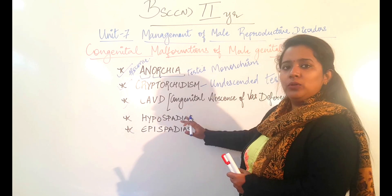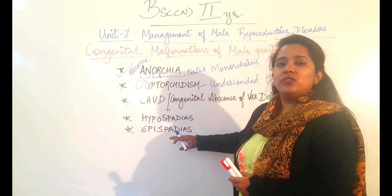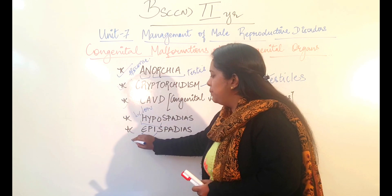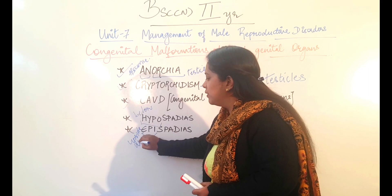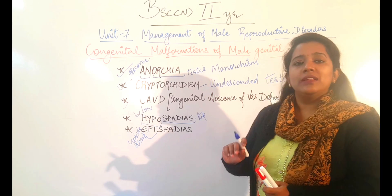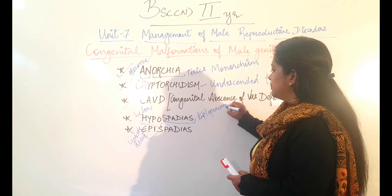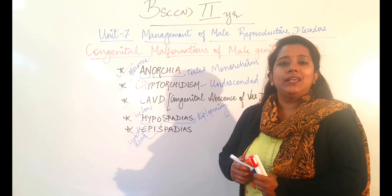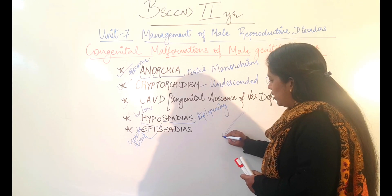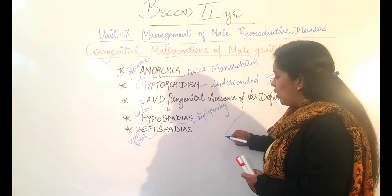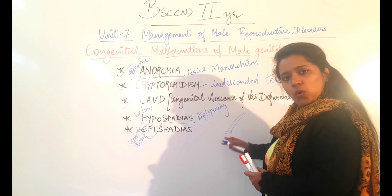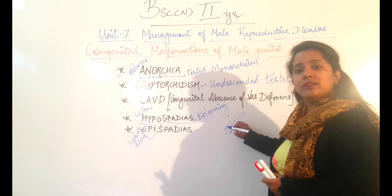Now we will deal with two conditions together: hypospadias and epispadias. First, let us understand what these terms mean. 'Hypo' means below, 'epi' means above or upside, and 'spadias' refers to the tip or opening. Normally, the opening of the urethra is at its tip. If that opening is not at the correct tip point — if it is below or above the urethral tip — then that is a congenital malformation.